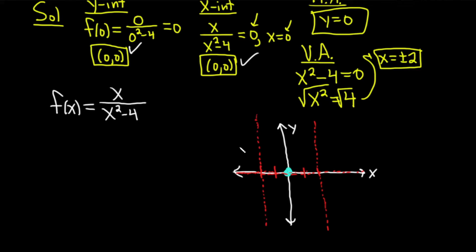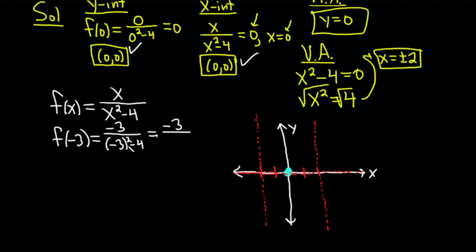We don't know where to draw the graph yet, so we need some test points. Let's plug in x equals negative 3. f of negative 3 equals negative 3 over negative 3 squared minus 4, which is negative 3 over 9 minus 4, giving negative 3 over 5. When x is negative 3, y is negative, so the graph is down here. The general shape has to approach the asymptotes.